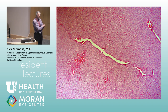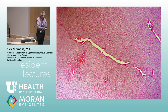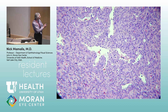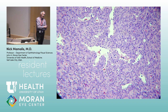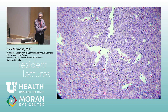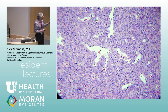You can get hemangiopericytomas of the orbit, especially within the muscle cone. It's a proliferation not only of the endothelial cells of the little blood vessels but also the surrounding pericytes. Here's a little vascular space with all kinds of them around, and then in between you have this proliferation of pericytes. This is kind of like lacrimal gland tumors in that you can get cases people call benign, intermediate, and more malignant.